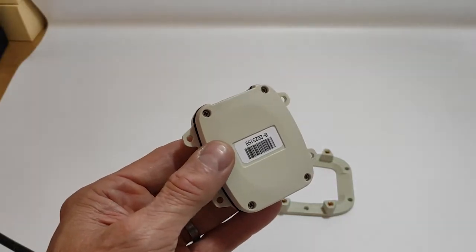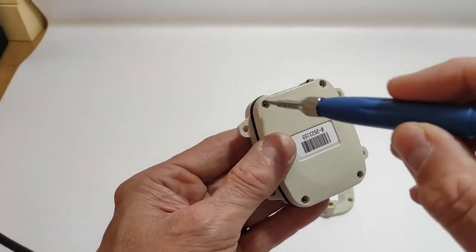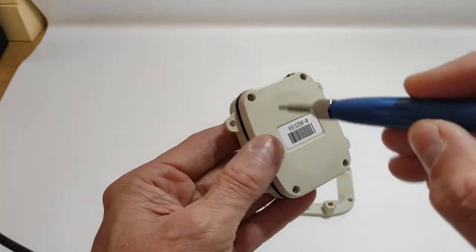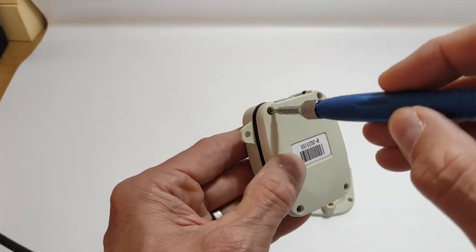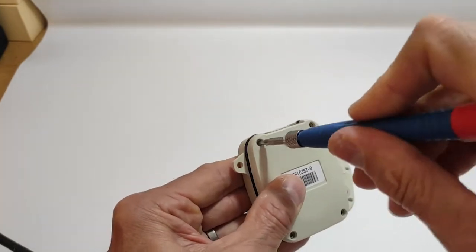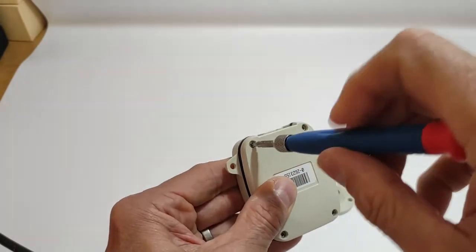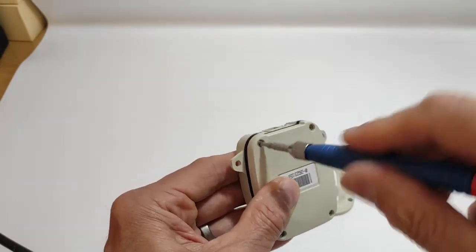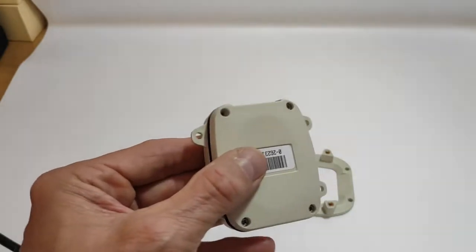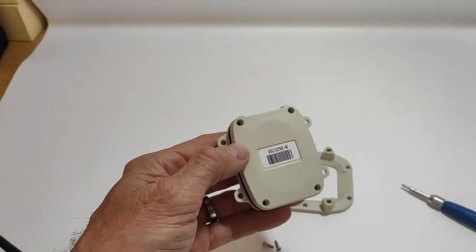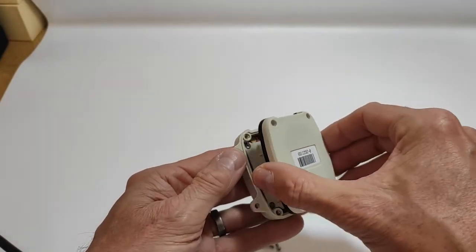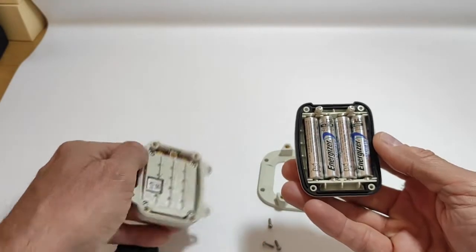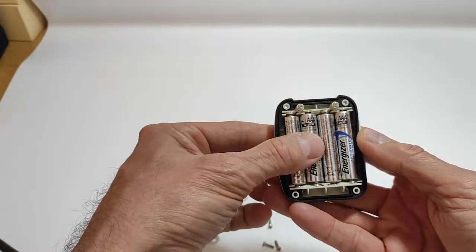Once you have turned off the device, you need to open the unit to be able to change the lithium batteries. Once again, four screws to unscrew. Here we go. Once you have unscrewed them, you just open the unit and inside you will see the four lithium AAA batteries.